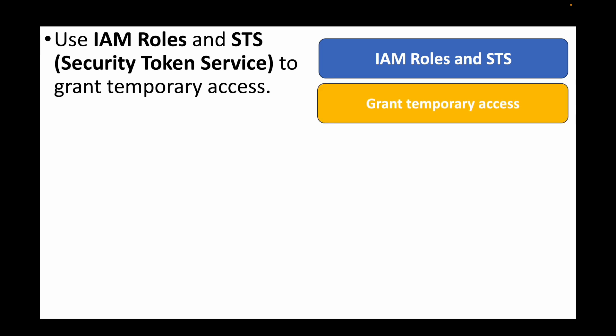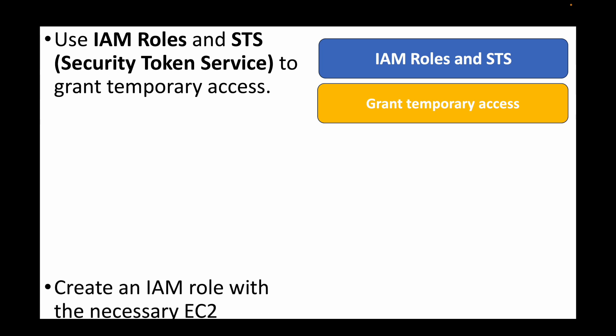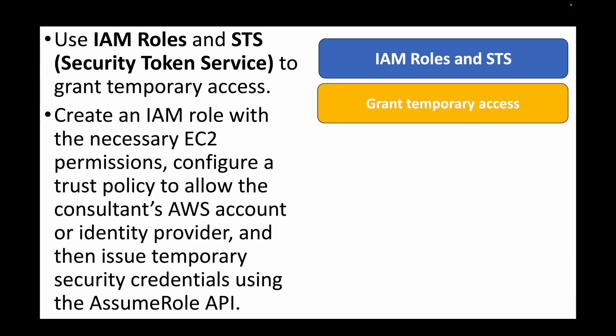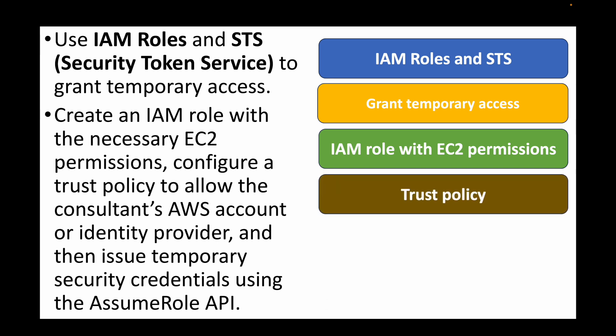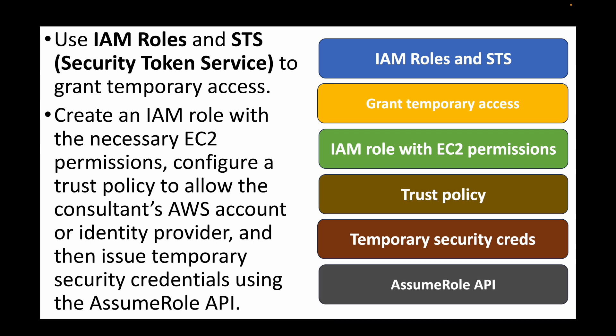We will need to create an IAM role and attach the necessary EC2 permissions to that role, then configure a trust policy to allow the consultant's AWS account or identity provider. We then issue temporary security credentials using the AssumeRole API. The role is created with the necessary permissions, the consultant assumes this role, which provides temporary credentials to access EC2 services based on the permissions defined.